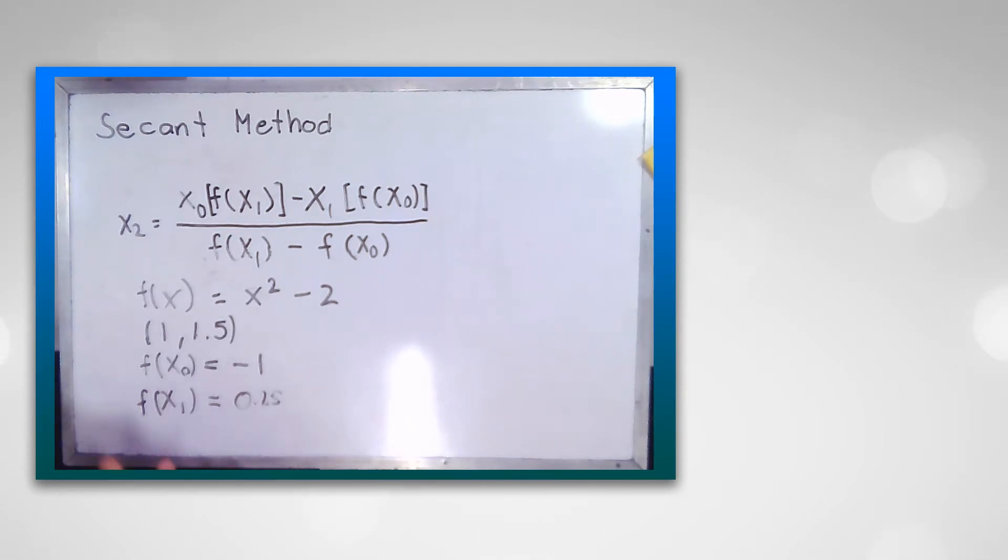So we will be assuming the first interval 1 and 1.5. The f(x₀) is -1. The f(x₁) is 0.25. If we multiply these two we will get -0.25, which satisfies our first step that it must be less than 0.